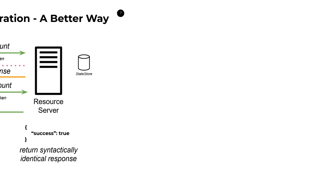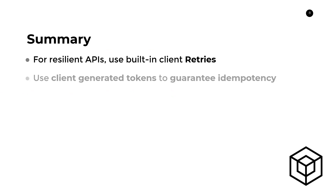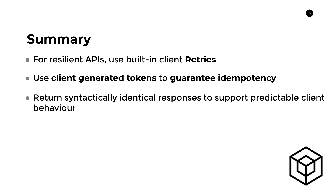In summary: for resilient APIs, we need to use built-in client retries with exponential backoff, we need to use client-generated tokens to guarantee idempotency, and we need to return syntactically identical responses to support predictable client behavior. If you enjoyed this video, there's an excellent article in the description that walks through this in much more detail. Thanks so much for watching.